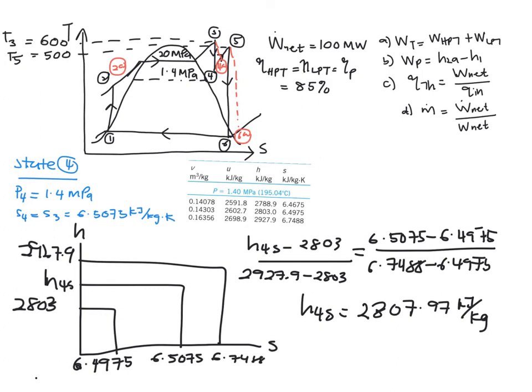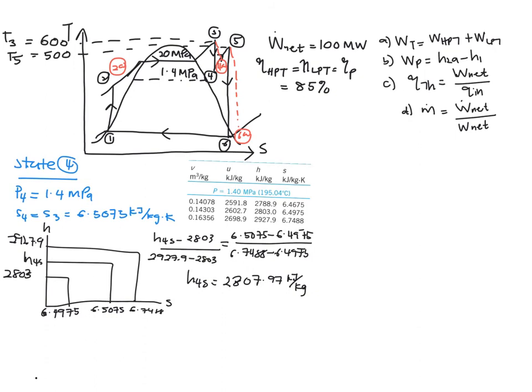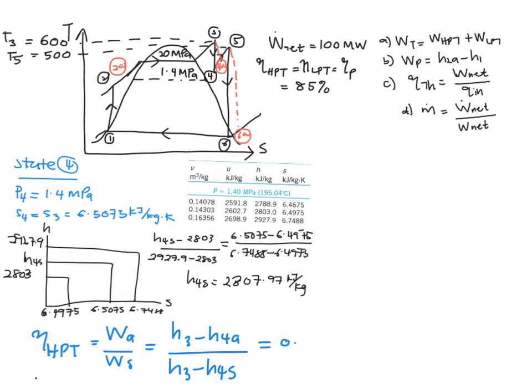Now next is to find your actual value, which is your H4. We are going to make use of this isentropic relation. You will have the work of your high pressure turbine. Isentropic efficiency of your high pressure turbine equals work actual over work S, which is H3 minus H4 over H3 minus H4S equals 0.85.